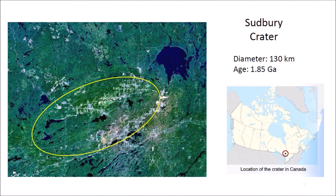The Sudbury crater is a large elliptical structure located in Ontario, Canada. The crater has a diameter of about 130 kilometers and it formed about 1.85 billion years ago. This area is known for its rich mineral deposits, particularly nickel and copper.